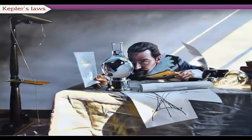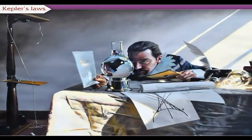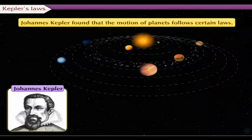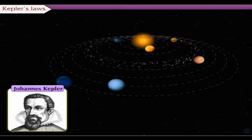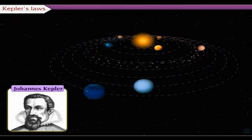Johannes Kepler studied the data available at that time. He found that the motion of planets follows certain laws. He stated three laws describing planetary motion.